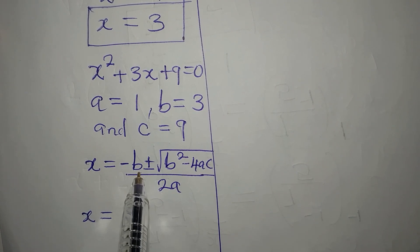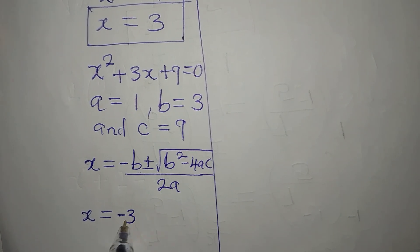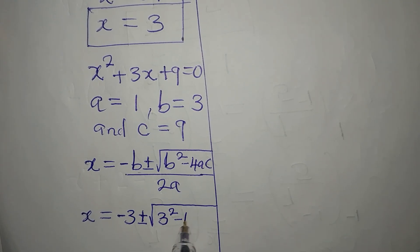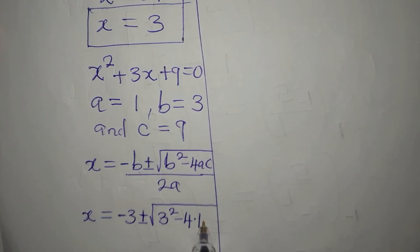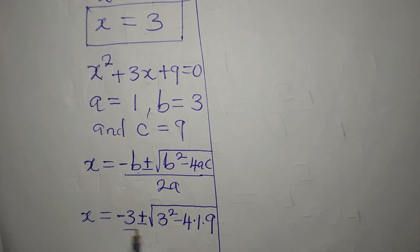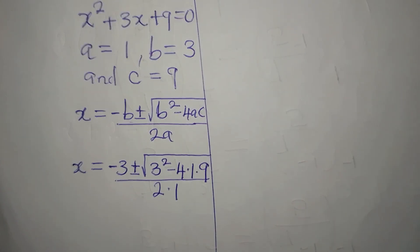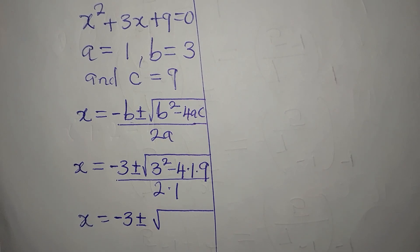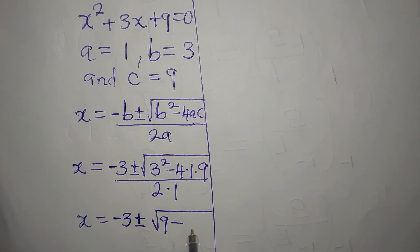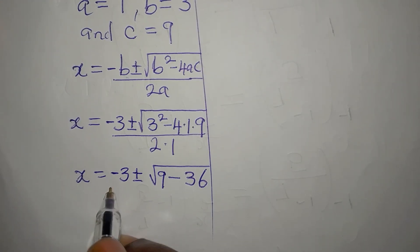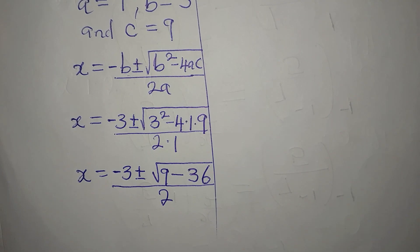The quadratic formula is x equals minus b plus or minus the square root of b squared minus 4ac, all divided by 2a. Substituting: x will now be minus b, which becomes minus 3, plus or minus the square root of b squared which is 3 squared, minus 4 times a which is 1 times c which is 9. So 4 times 1 times 9, all divided by 2 times 1.